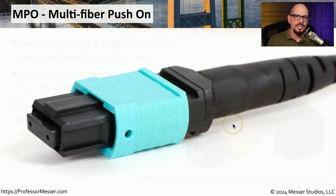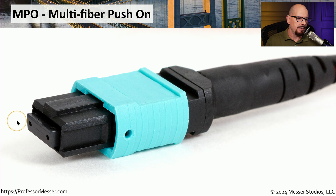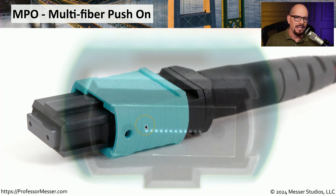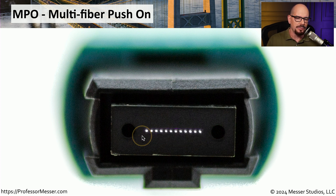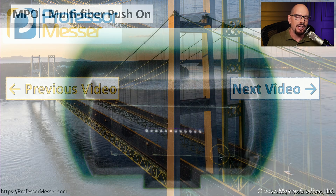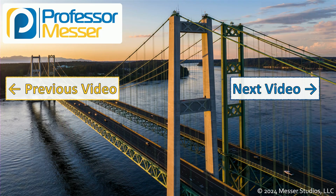Here's a side view of the connector. It has a lock on the top, and the individual fibers are the smaller dots you can barely see in this picture. If we look at it straight on with some light being sent through the fiber, you can see that all 12 of those fibers are much easier to see on the MPO connector.